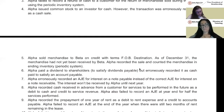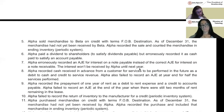Number five: Alpha sold merchandise to Beta on credit with terms FOB destination. As of December 31st, the merchandise had not been received by Beta. Alpha recorded the sale and counted the merchandise in ending inventory using the periodic inventory system. With FOB destination, if the goods have not reached their destination yet, nothing should be recorded.